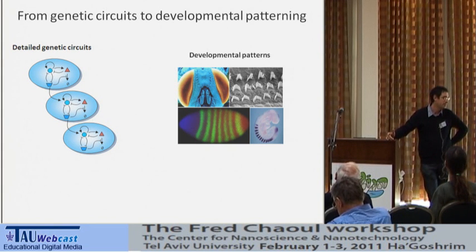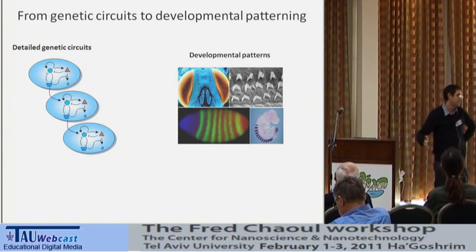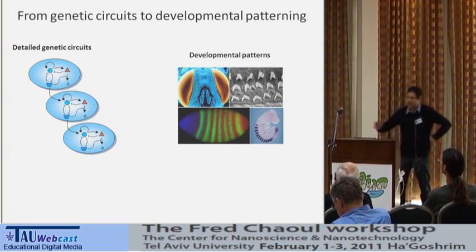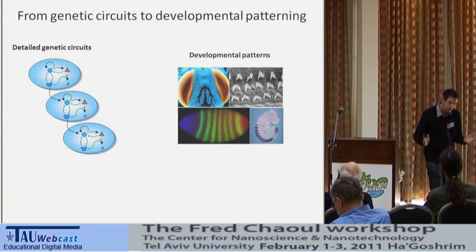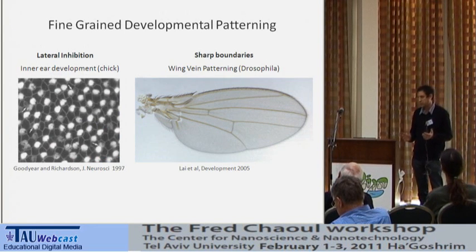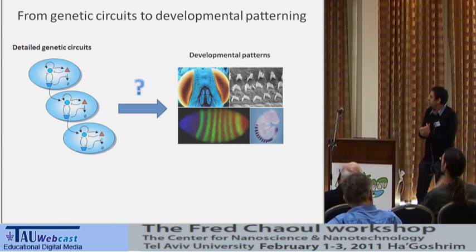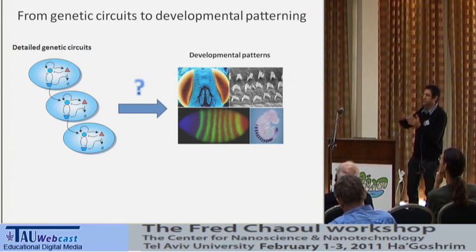In the last couple of decades, we've gained a lot of information about the components involved in each step during development of a full-fledged organism. We're at the stage where we can draw detailed genetic circuits that underlie each of the developmental processes. But the problem is that even though we can draw these detailed genetic circuits, we often do not understand how they give rise to the patterns or to the functions.